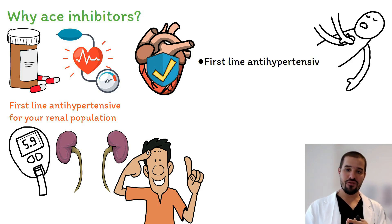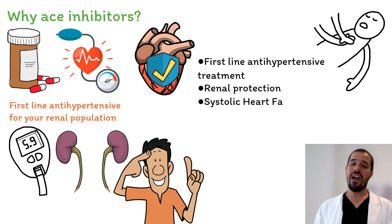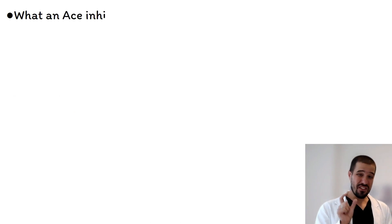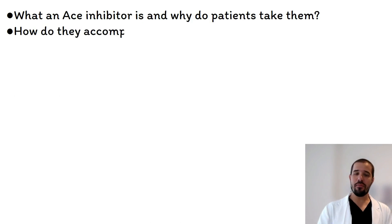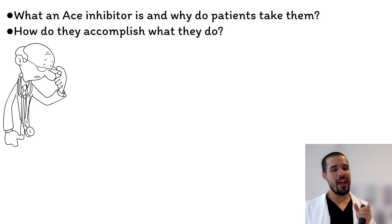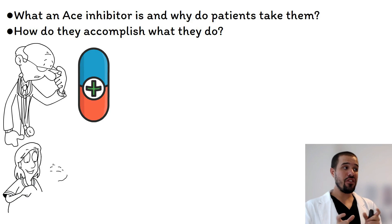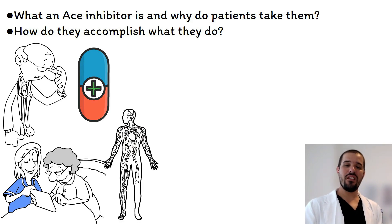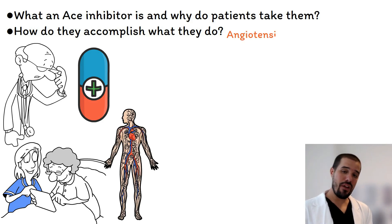So to summarize: first-line antihypertensive treatment, renal protection, systolic heart failure, and post-MI treatment. Now that we can distinguish what an ACE inhibitor is and why patients take them, how do they accomplish what they do? As a pharmacology instructor, I highly emphasize the mechanism of action of medications — as a nurse you need to understand what a medication is doing in the human body.